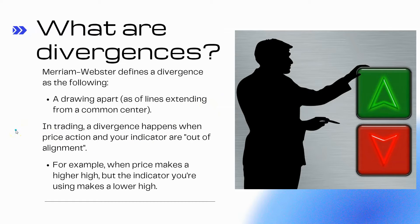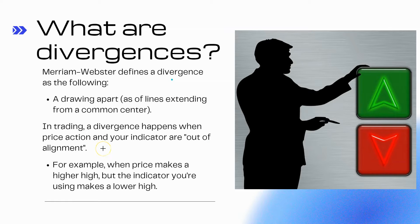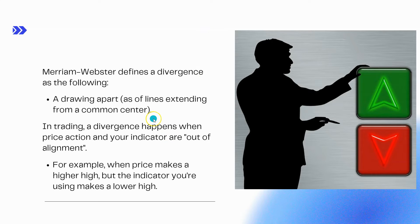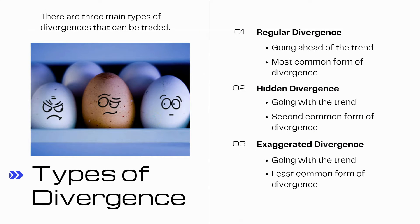So let's begin with the definition: divergence quite simply is a drawing apart, as of lines extending from a common center. In trading, a divergence happens when price action and your indicator are out of sync, out of alignment. This would happen, for example, when price makes a higher high and yet your indicator is making a lower high. When that happens, you have a divergence — an early warning signal telling you something's going on with this trend.